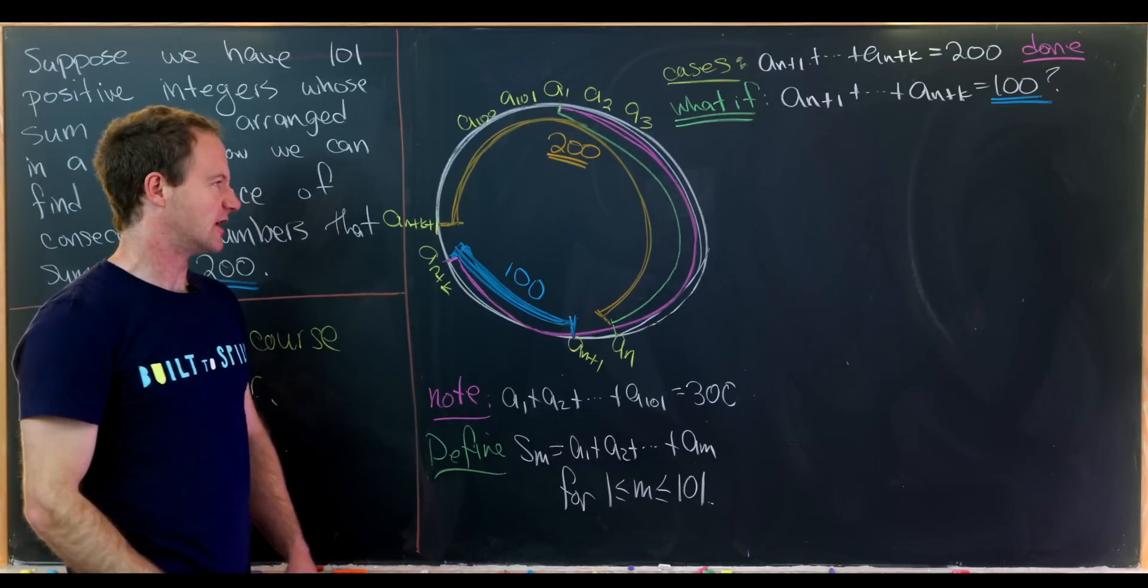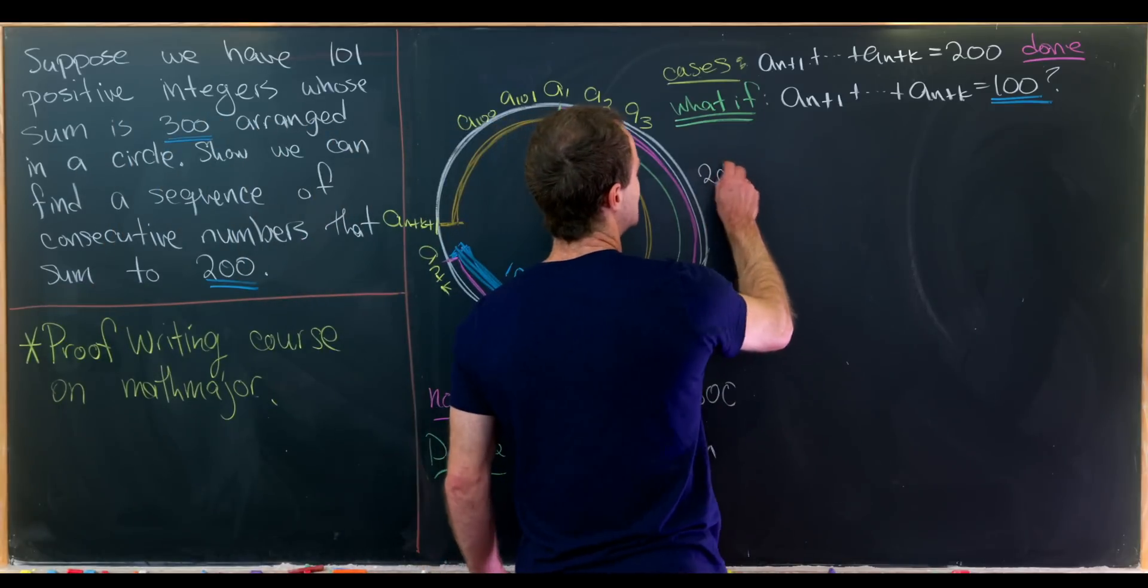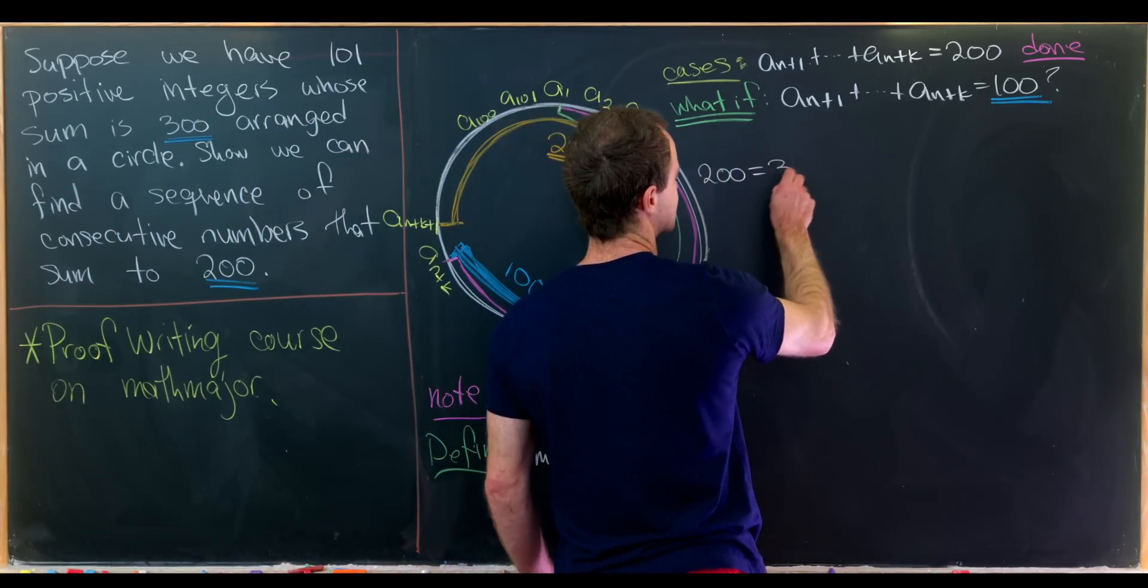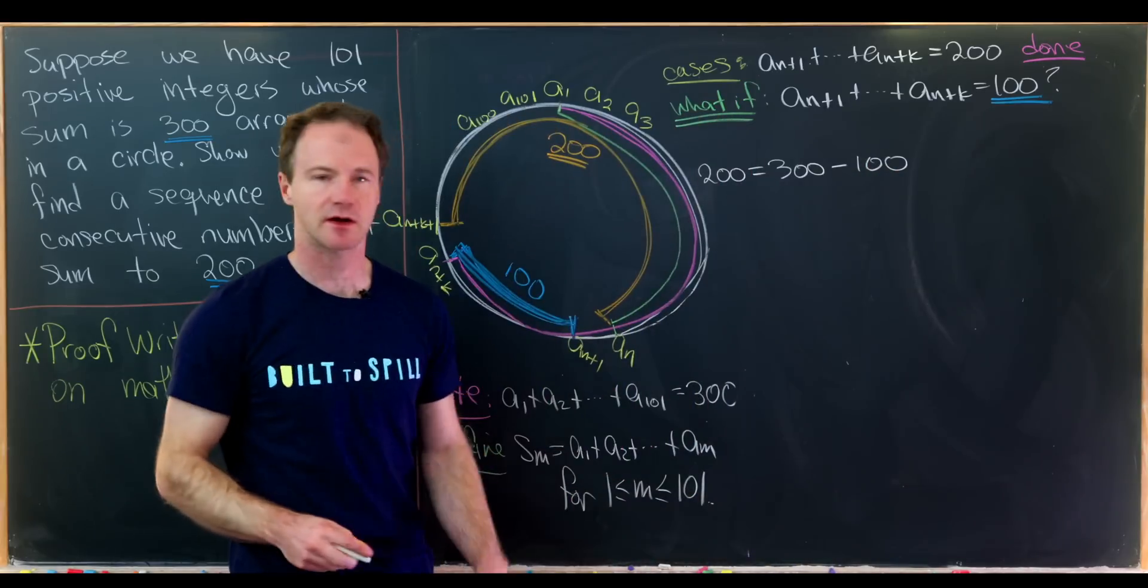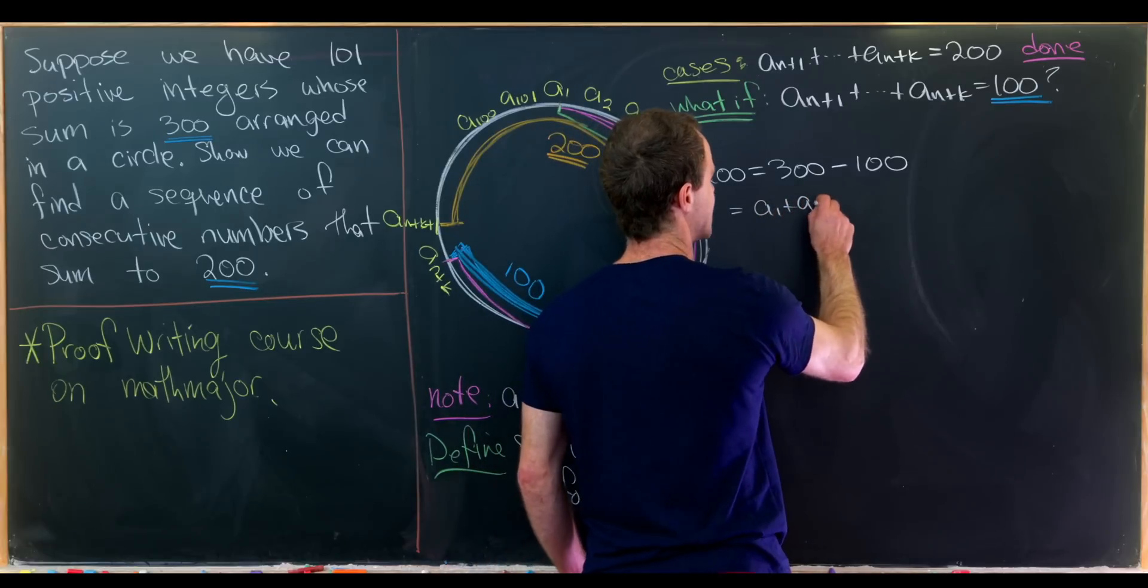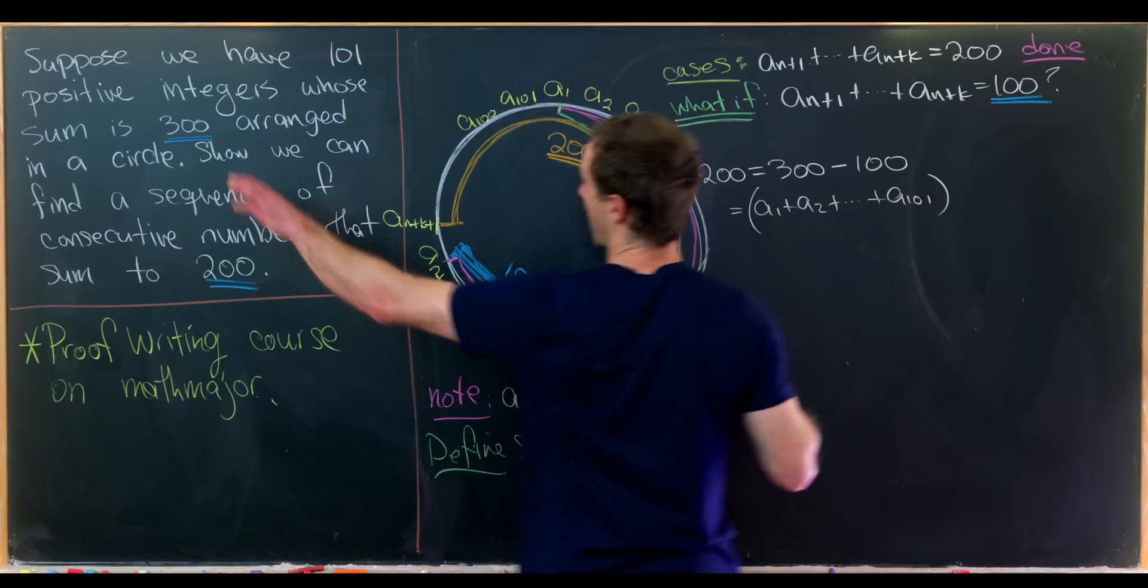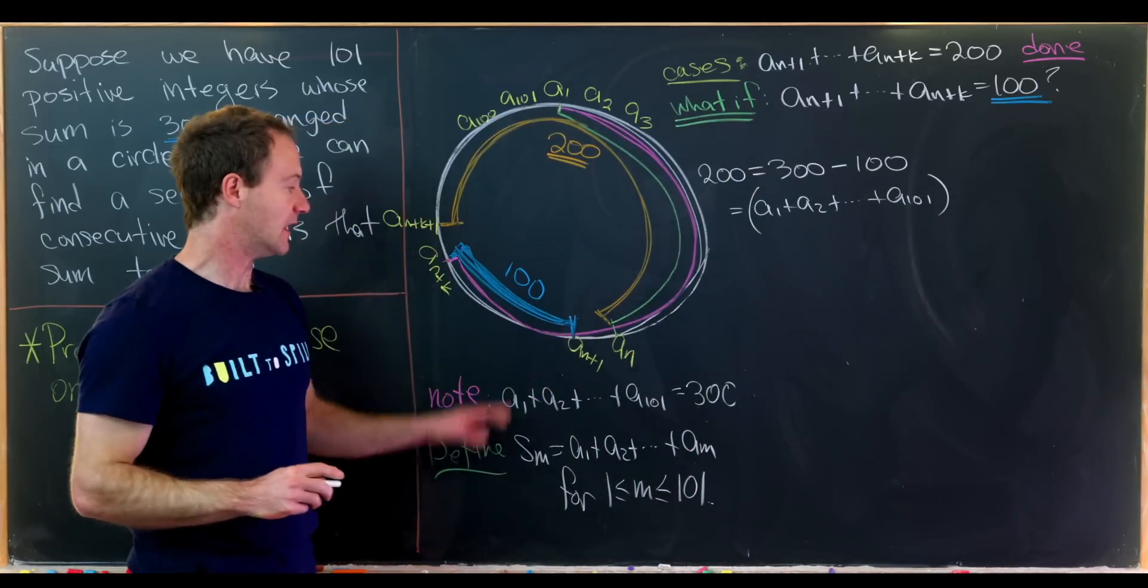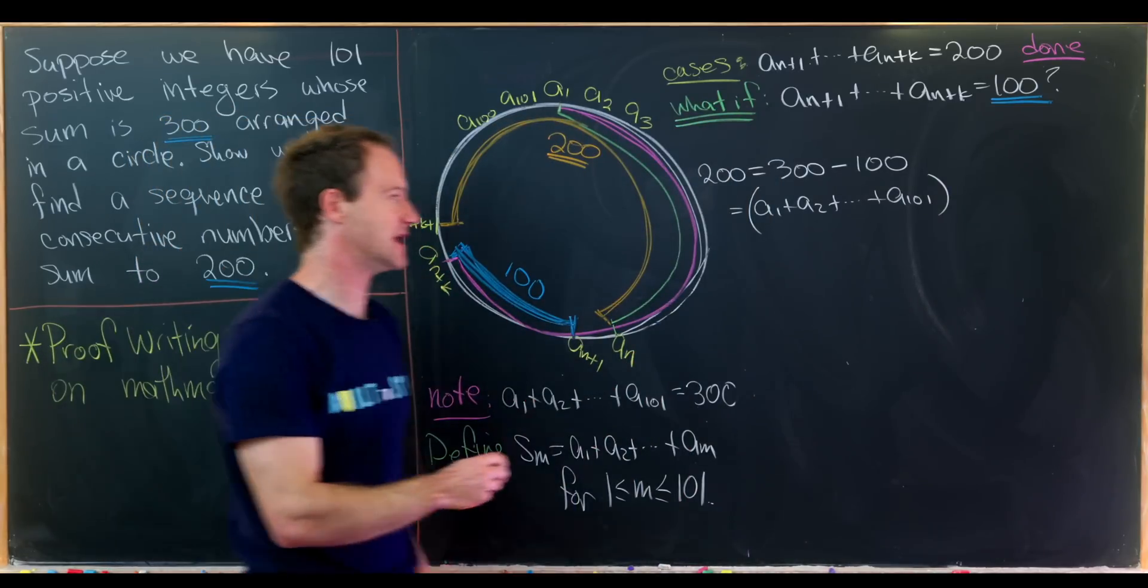Great. Then maybe we could write that down in an equation as follows. So let's notice that 200 is the same thing as 300 minus 100.